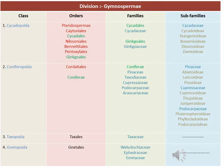The table shows a summary of the lecture. Division Gymnospermae has 4 classes: Cycadopsida, Coniferopsida, Taxopsida, and Gnetopsida. Cycadopsida has orders: Pteridospermales, Caytoniales, Cycadales, Nilssoniales, Bennettitales, Pentoxylales, and Ginkgoales. Cycadales and Ginkgoales have living families; all others are extinct. Cycadales has the family Cycadaceae and Ginkgoales has the family Ginkgoaceae.